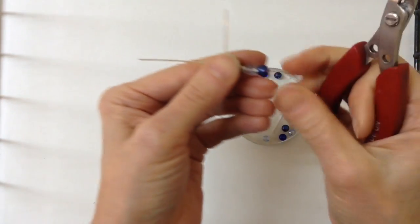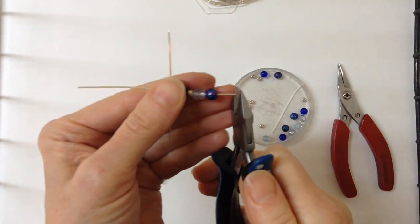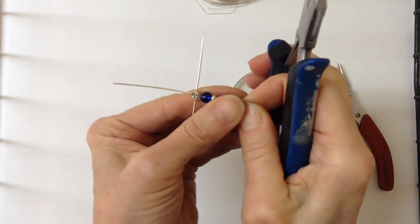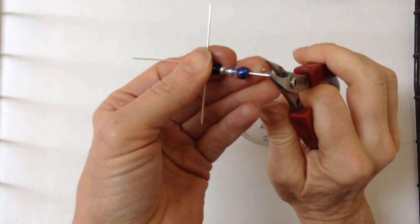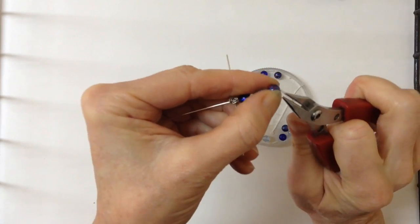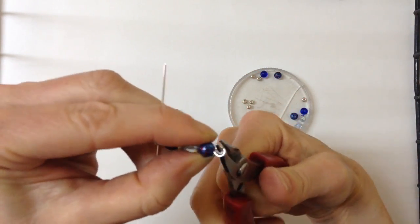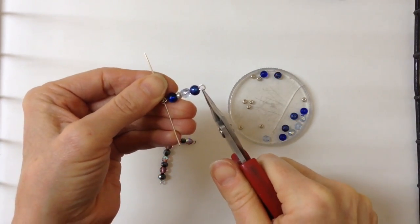Once you have the pattern you like, you're going to trim the end to about three eighths of an inch. Then we're going to go across and loop it like that, so at the top we have a nice finished loop.